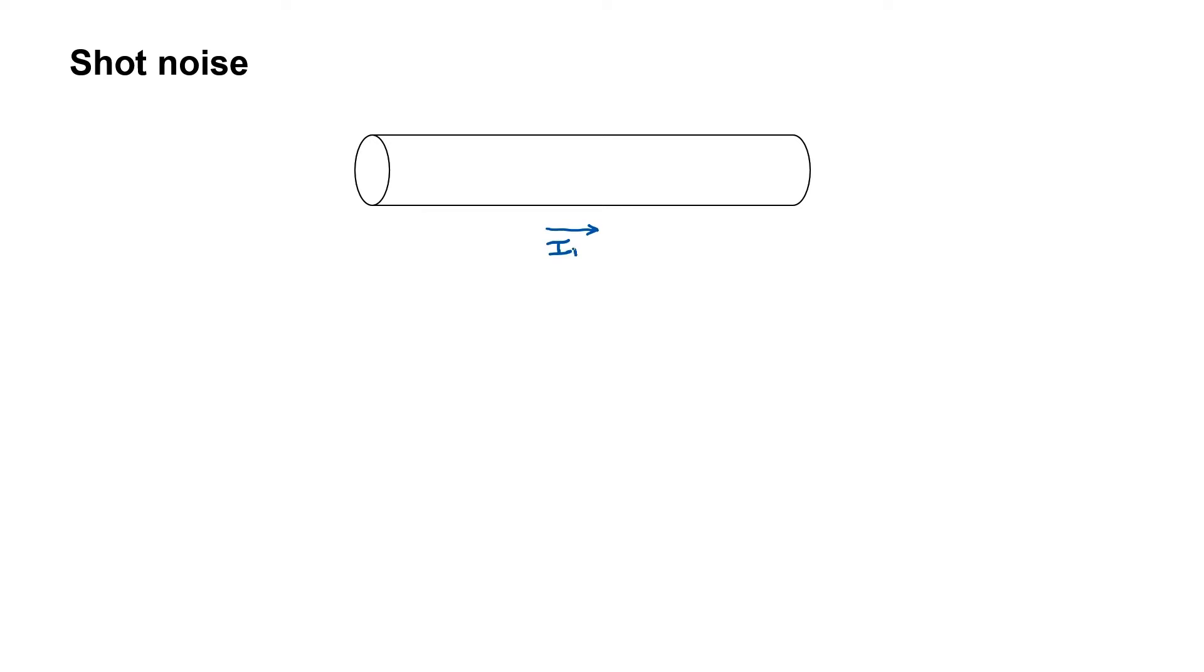Let me give you an example. Let's consider a conductor that has a DC current flow through it. This would happen, for example, if you had a battery with a particular voltage on it and the conductor had a particular resistance R.